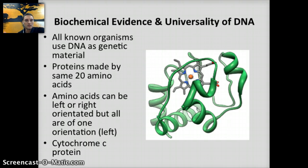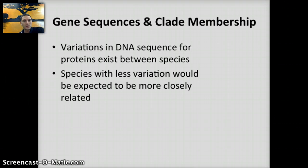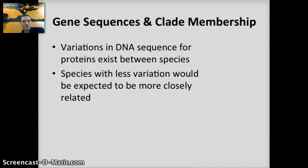By examining gene sequences of different species, we can organize organisms into different clades. Species with less variation in their DNA sequence would be expected to be more closely related. For example, the rhesus monkey has a threonine rather than an isoleucine as the 66th amino acid in cytochrome C. This suggests that humans and chimps are more closely related to each other than they are to rhesus monkeys.